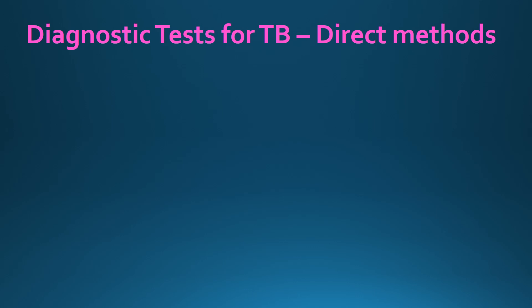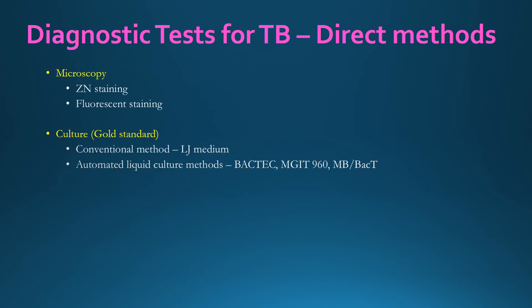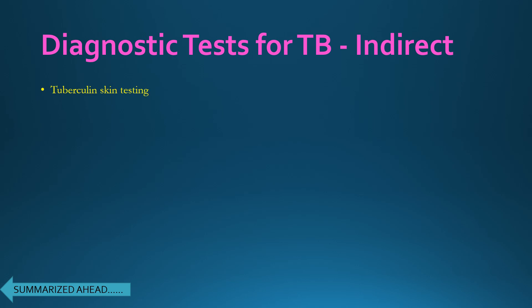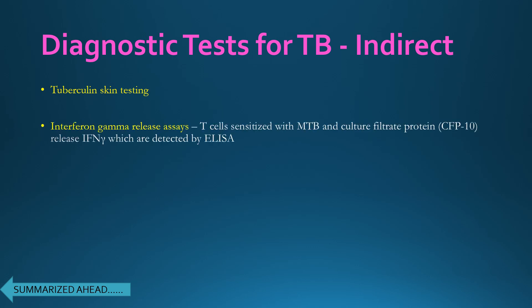Diagnostic tests for tuberculosis can be direct or indirect. Direct methods include microscopy (Ziehl-Neelsen and fluorescent staining), culture — still the gold standard, done on Lowenstein-Jensen medium or by automated liquid culture methods like BACTEC MGIT 960 — antigen detection (lipoarabinomannan antigen detected by LF-LAM dipstick), and molecular methods like GeneXpert, GeneXpert Ultra, TrueNAT MTB+, line probe assay, TB-LAMP, and whole genome sequencing including next-generation sequencing.